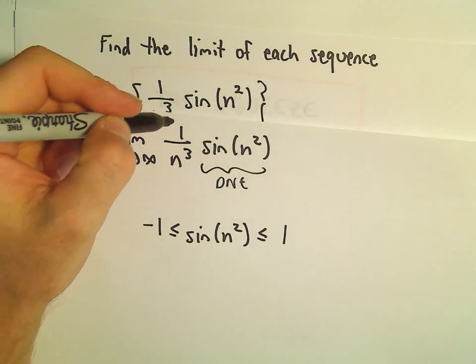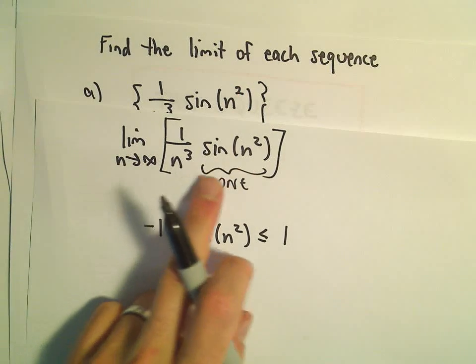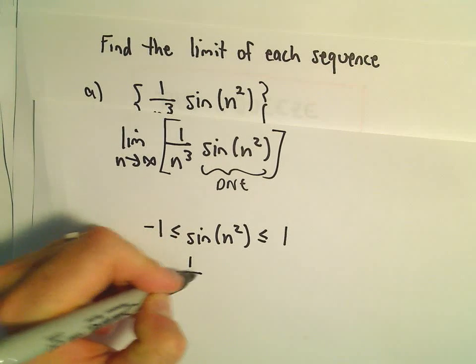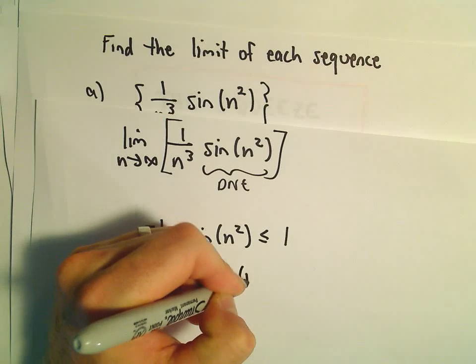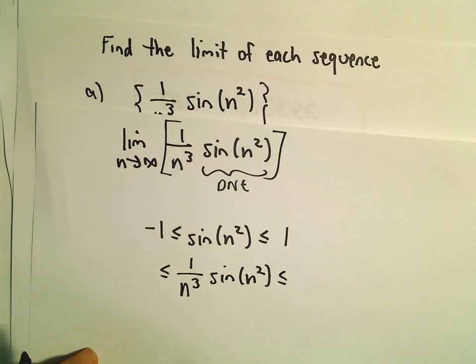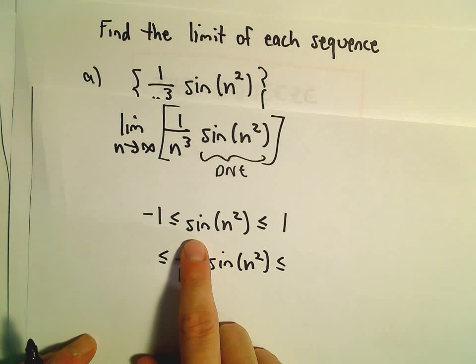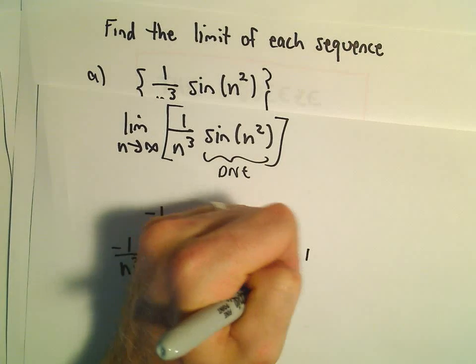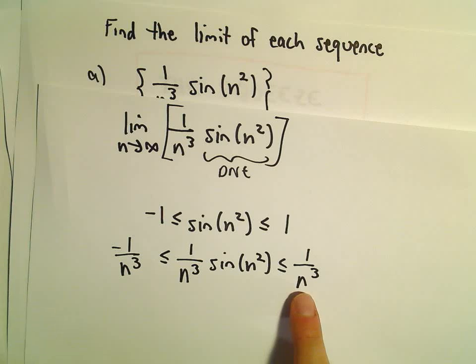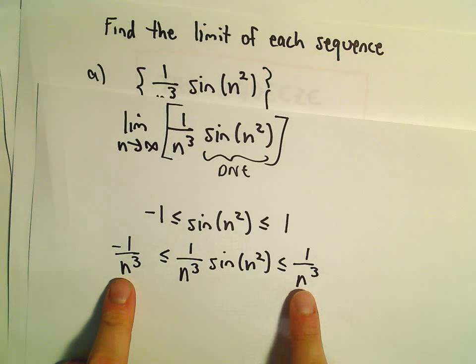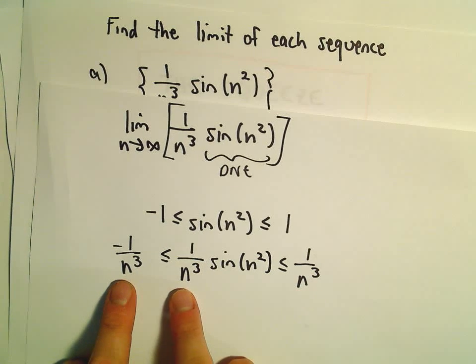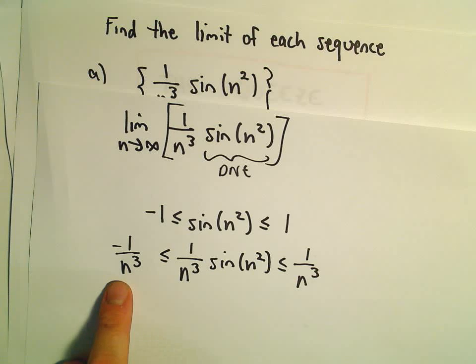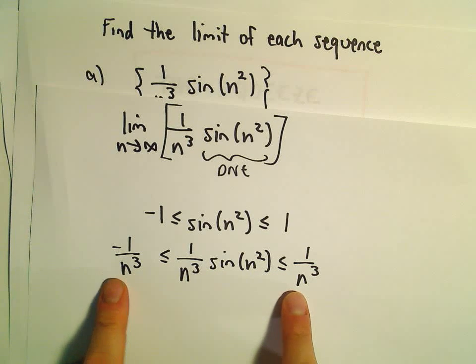The function I want, I don't want just sine of n squared. I want sine of n squared times 1 over n to the third. Since n's some positive number, if we multiply by 1 over n to the third, multiplying the left side by 1 over n to the third, and the right side by 1 over n to the third. 1 over n cubed sine of n squared is always going to be greater than or equal to negative 1 over n cubed, but it's always smaller than positive 1 over n cubed.